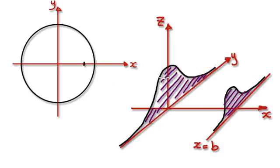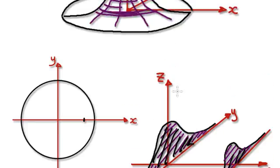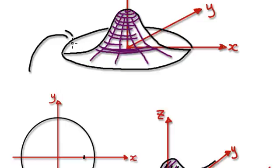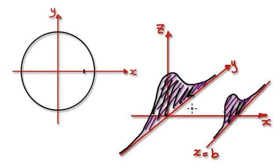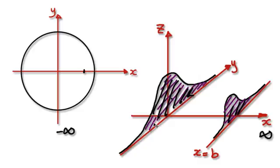So if you sum up all the slices — if you sum up all these areas here from negative infinity all the way to positive infinity — you can work out the volume of this thing here. I will continue in the next video.